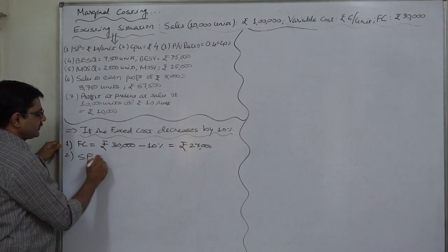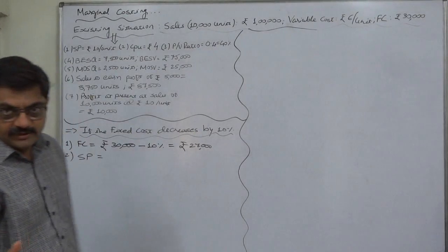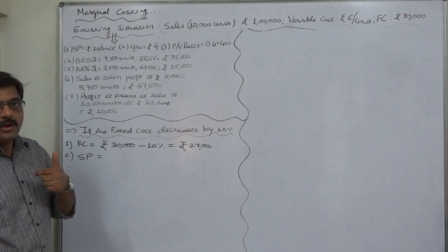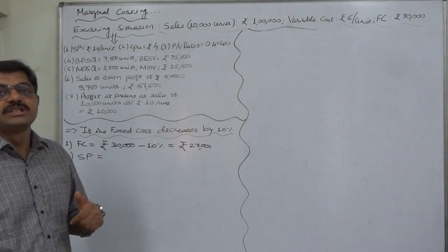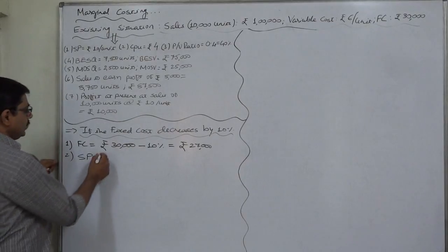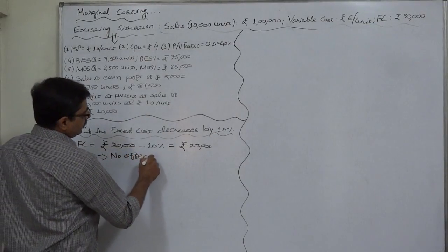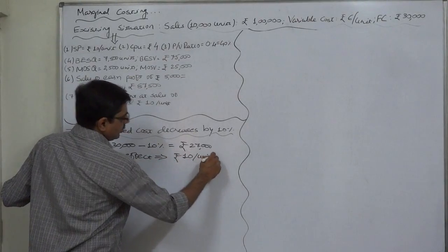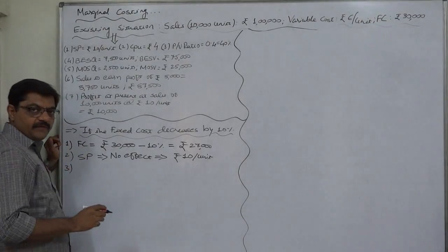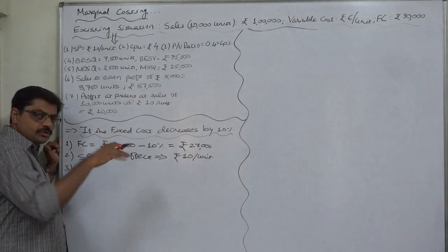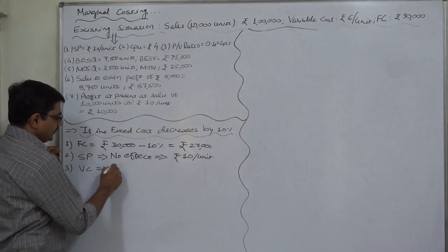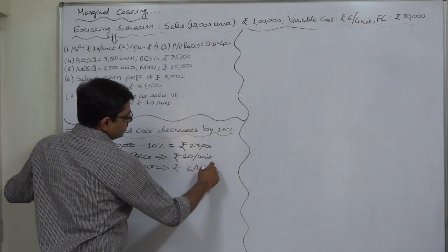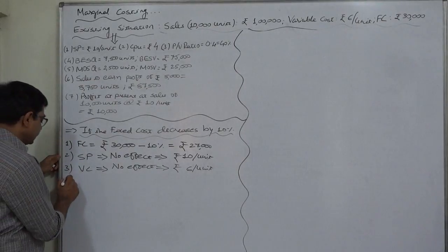This decrease in fixed cost will have no effect on selling price. Selling price changes only if the owner or management of the company decides to change it. So selling price remains ₹10 per unit. Similarly, there is no automatic effect of a change in fixed cost on variable cost, so variable cost also remains ₹6 per unit.